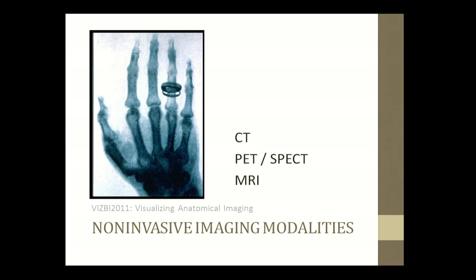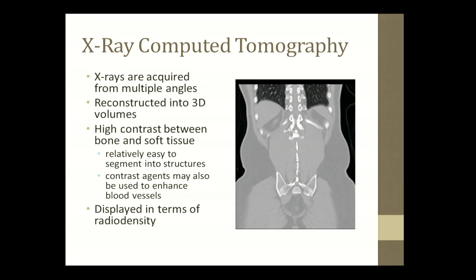Most of you are probably familiar with this image. This is the first noninvasive medical image — an x-ray of the hand of the wife of the discoverer of x-rays, Wilhelm Röntgen. This is really how it all started. X-rays form the basis for the first form of 3D tomographic imaging, which is x-ray CT, developed in the 70s. In x-ray CT, you essentially acquire x-rays from multiple angles of the body and reconstruct a 3D image. In each pixel or voxel, you have a measure of the radio density, which is measured on a quantitative scale that allows a variety of processing and visualization.